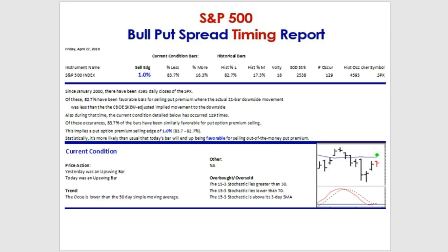That's just a 1% difference — pretty much a wash in terms of bull put spreads. Technically it's a little bit higher, so it would be marginally more likely to be favorable, but it's so close we're calling this a wash. There's really just a 1% advantage over the benchmark.